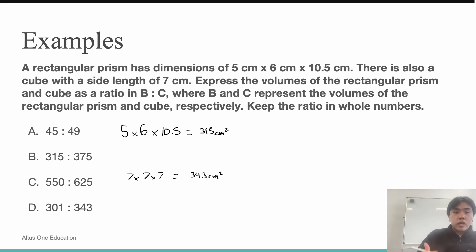Now, we need the ratio in B to C, where it's a rectangular prism to a cube. So, 315 to 343. If we look at the answers, this answer is not one of the options. So, we know that we have to simplify it to get the right answer. If we simplify it, we get 45 over 49, which is A.